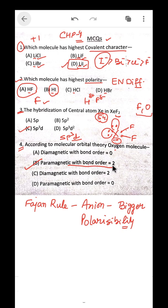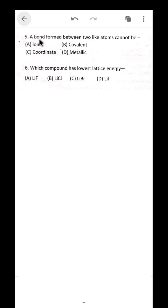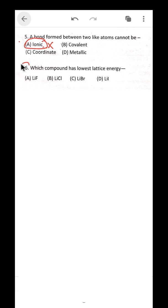Question 5: a bond formed between two like atoms cannot be — the answer is ionic bond. An ionic bond cannot form between two identical atoms, so the answer is ionic bond.